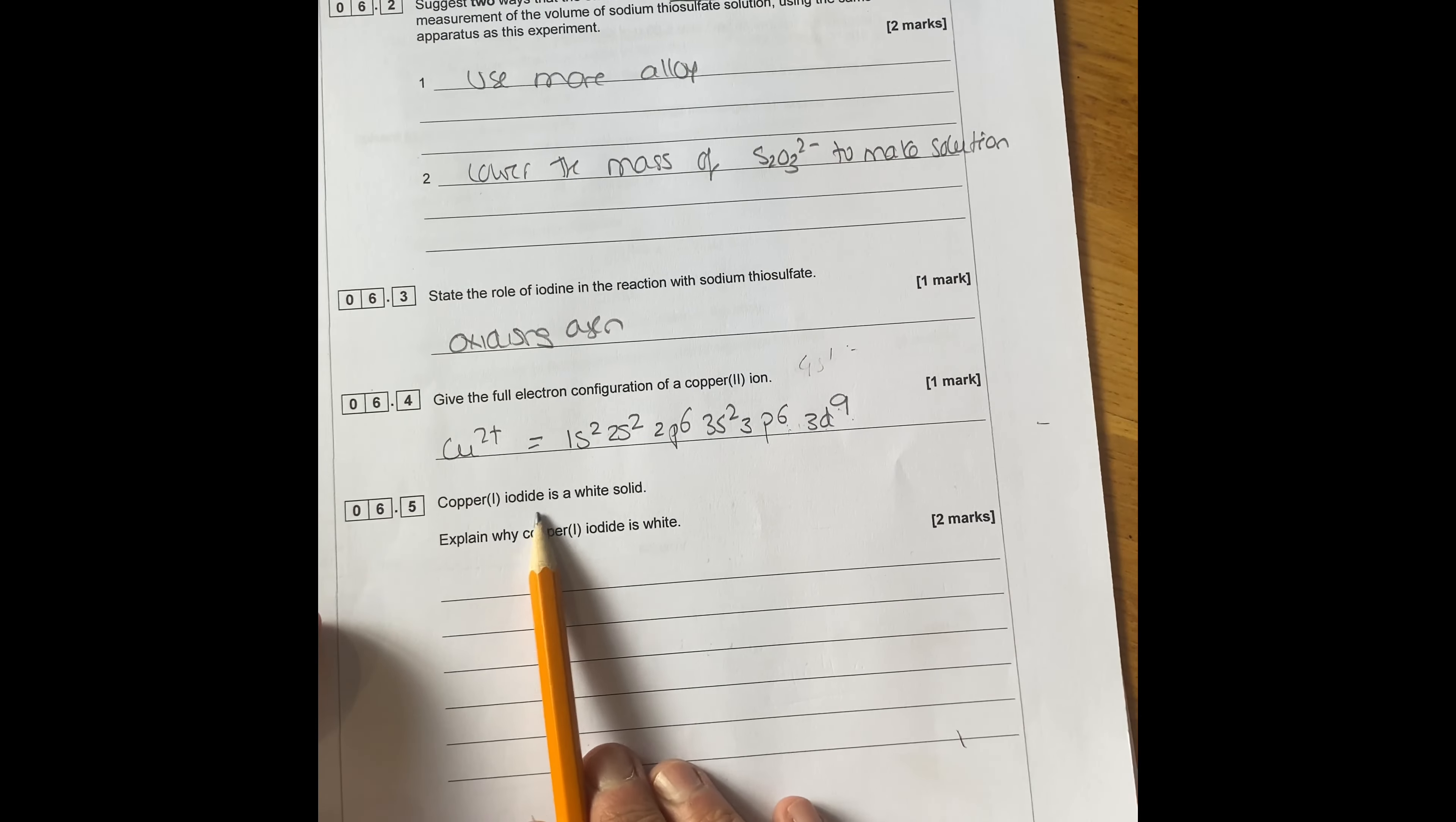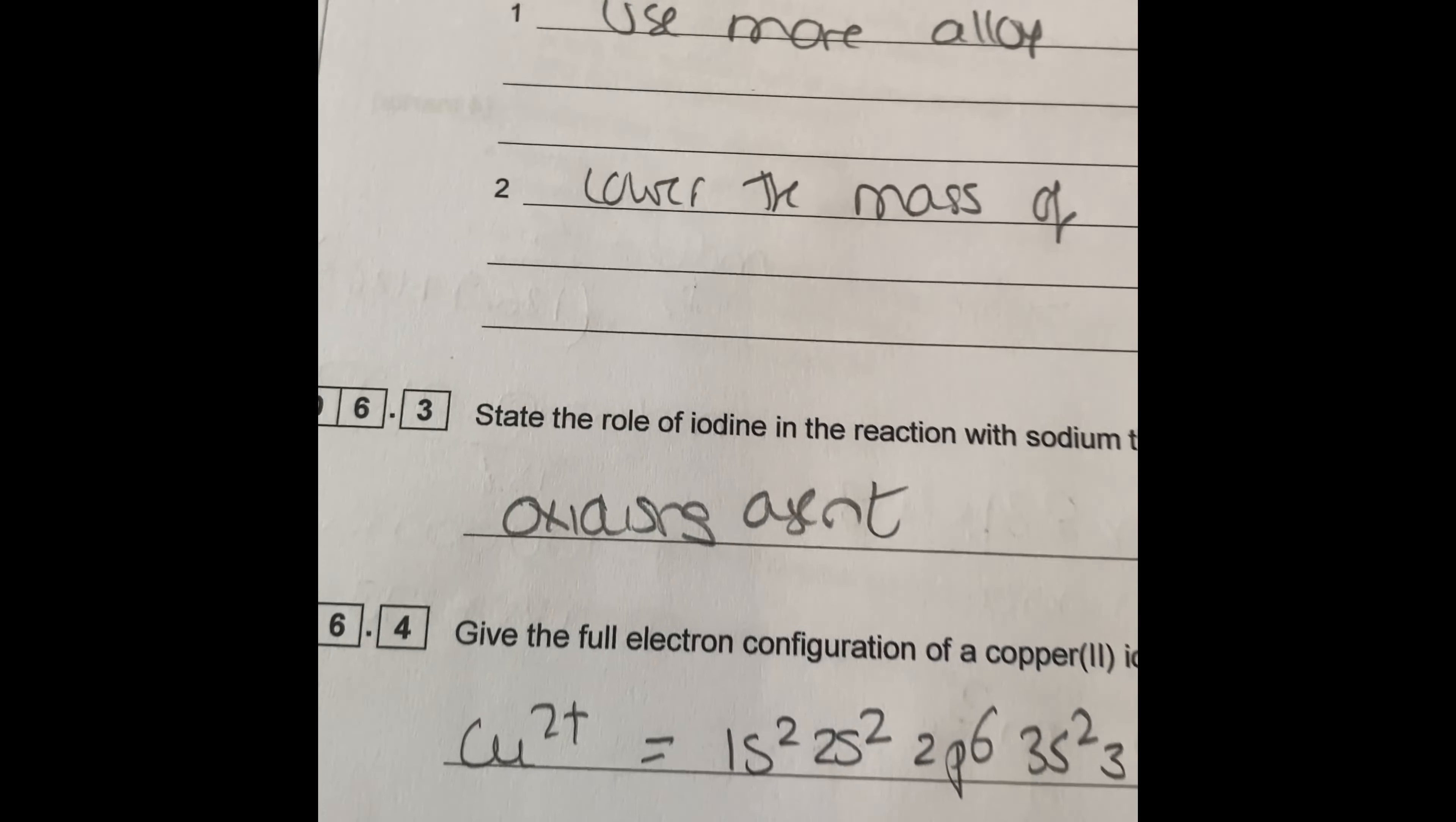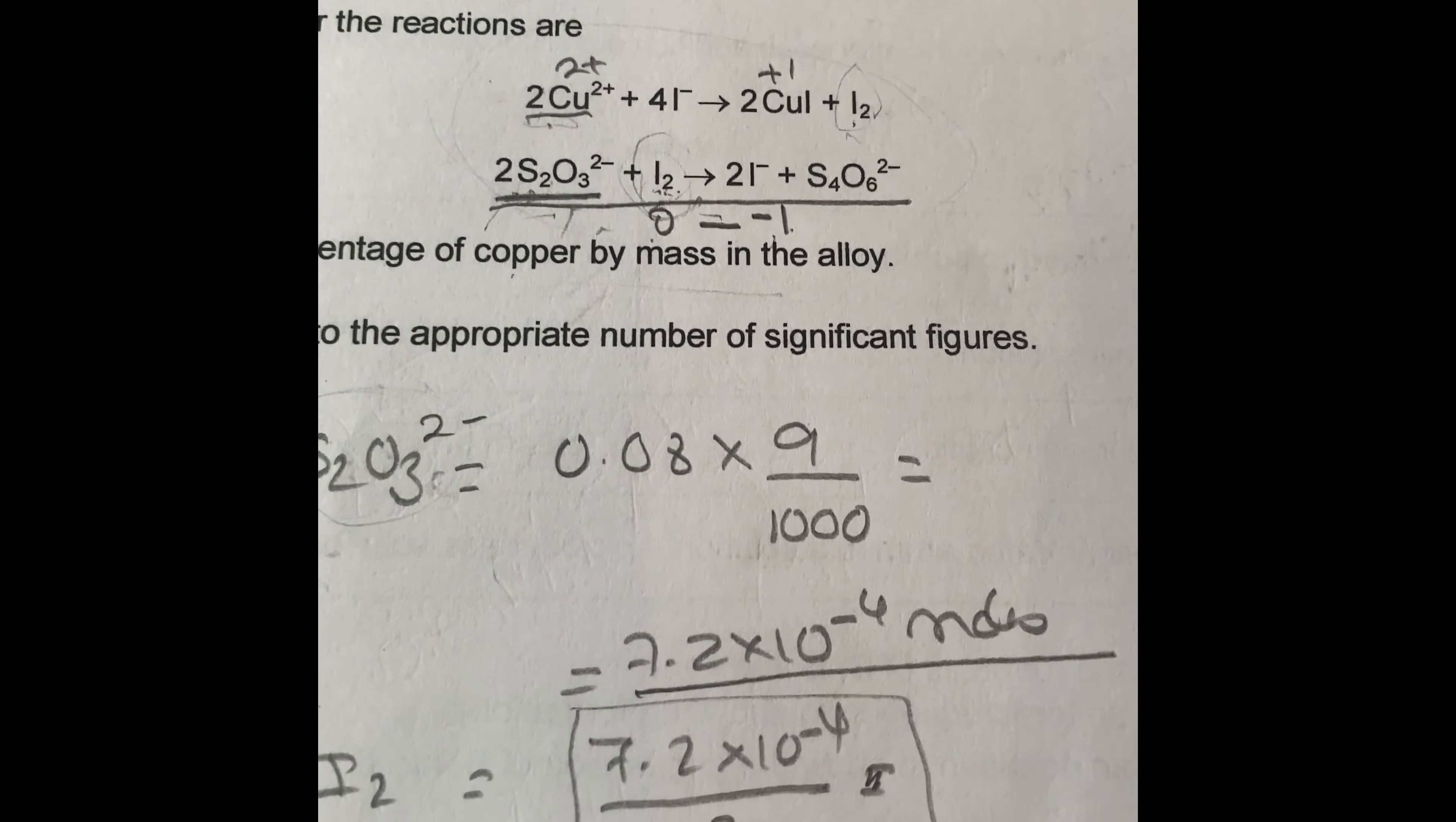Copper iodide is a white solid. Hold on, sorry. I just made a mistake there. Just to clarify this question again. It says here, state the rule of iodine is reactor thiosulfate. I said something correct. So it will be like thiosulfate plus iodine. So iodine is zero goes to minus one. So iodine is reduced. So therefore iodine is oxidizing agent.